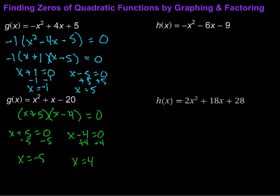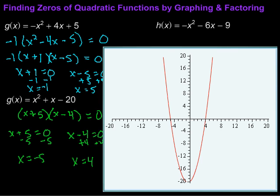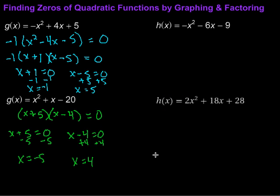Well, what if we graphed it? Would we end up with the same thing? Let's check it out. Here's the graph for that function, x squared plus x minus 20. And notice, right here, it's crossing the x-axis at 4, and over here, it's crossing the x-axis at negative 5. So, sure enough, the graph and the x-intercepts are our zeros, are our solutions if we're working with equations. Let's get that out of here, and then take a look at a couple more.